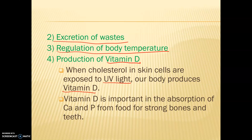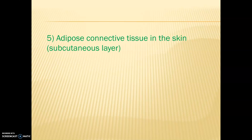Vitamin D is important for the absorption of calcium and phosphorus that comes from our food, and that's really important for bones and teeth in our body. So the production of vitamin D is probably one of the highest functions of our integumentary system. Another function involves adipose connective tissue in our skin — our subcutaneous layer — which provides insulation and cushioning.